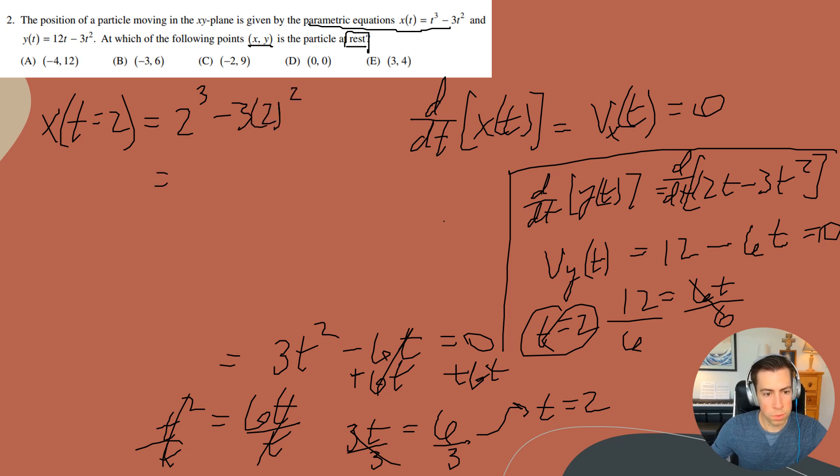I'll plug in 2. 2 cubed is going to be 8, and then if I subtract off 3 times 2 squared, that's going to be 12. So I will be left with negative 4. So I know that x at t equals 2 equals negative 4. Now if I go and look at my answers here, I can already see that the correct answer should be A, but I'm going to double check both sides.